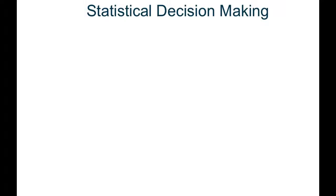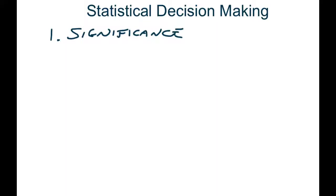I wanted to take a minute and create a brief video to go over a couple of really important topics that we covered in a previous lesson as we started to talk about t-tests. Specifically, I want to address the concept of statistical significance — how do we know when the difference between two means or a mean and a population is a real difference or just sampling error? And the other concept has to do with errors. When we make one of those inferences, there's always a chance that we are wrong, and I want to help you better understand type 1 and type 2 errors.